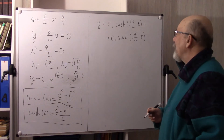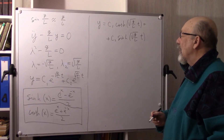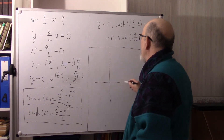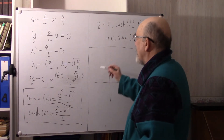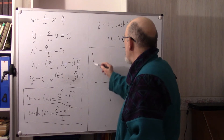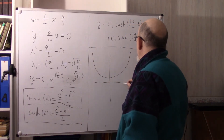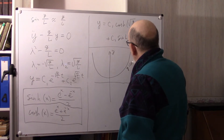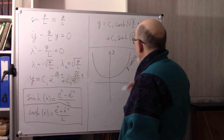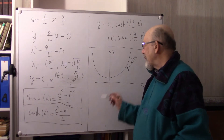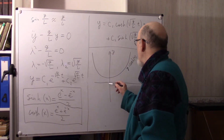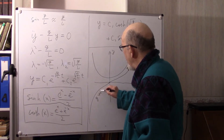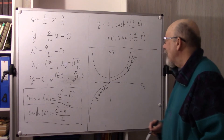Using these, the solution becomes Y equals C1 times cosh(sqrt(G/L) t) plus C2 times sinh(sqrt(G/L) t). The hyperbolic cosine is an even function — it has a minimum at X equals 0 and grows in both directions. The hyperbolic sine is an odd function: at X equals 0 it is zero, with derivative 1.